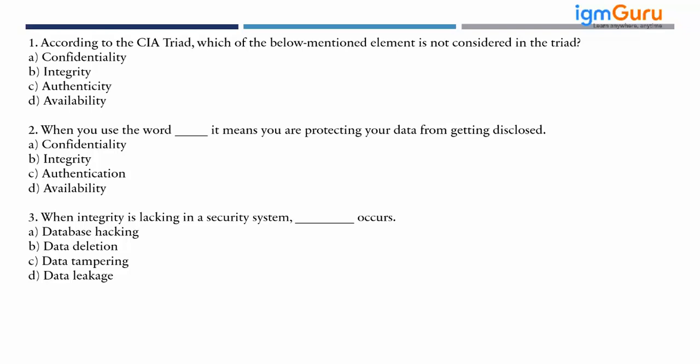A quick Q&A on the CIA triad: confidentiality means protecting your data from being disclosed. Integrity means ensuring data has not been tampered with. Availability ensures that data and systems are accessible when needed. The student correctly identified these three principles.